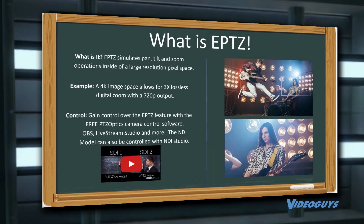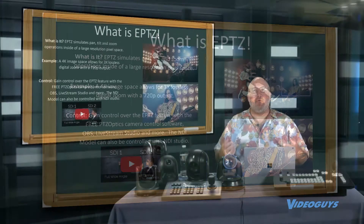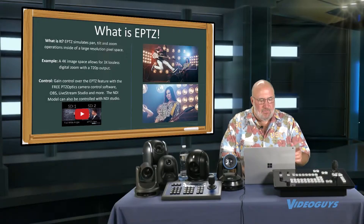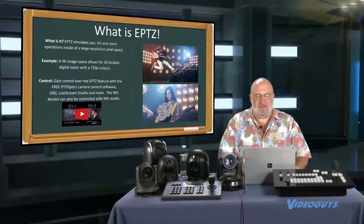An EPTZ camera is basically a 4K camera that automatically pulls out HD regions of interest. You can use that to do motion capture or to set presets, and it's a really cool technology. We have EPTZ technology from two of our vendors, so we're going to go into it — but before we do that, let's roll the video we have on EPTZ.